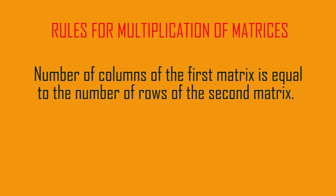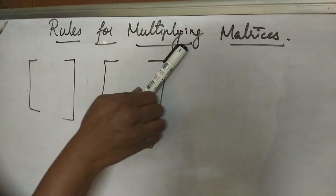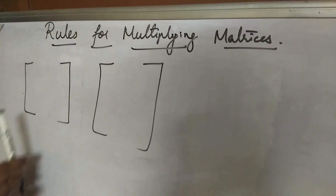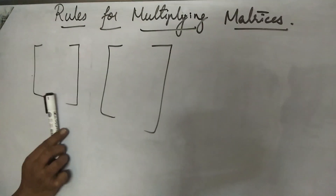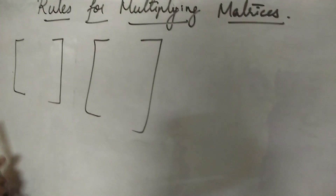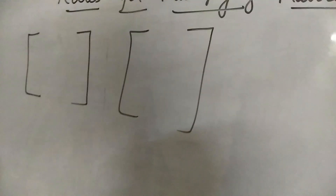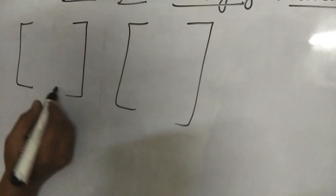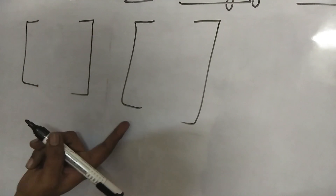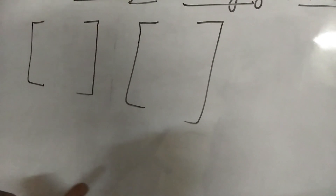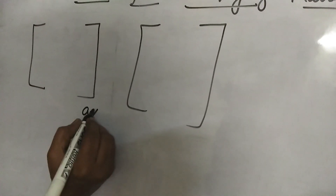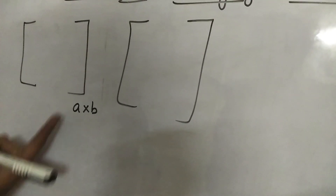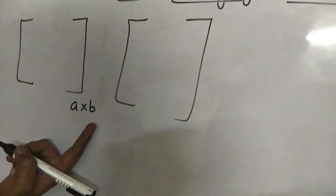Let us start exercise 9C — multiplying matrices. We have two matrices to multiply. First, what we have to check is the order of the matrices. The first one — how many rows and how many columns? We don't know. Let it be A by B, meaning number of rows by number of columns.